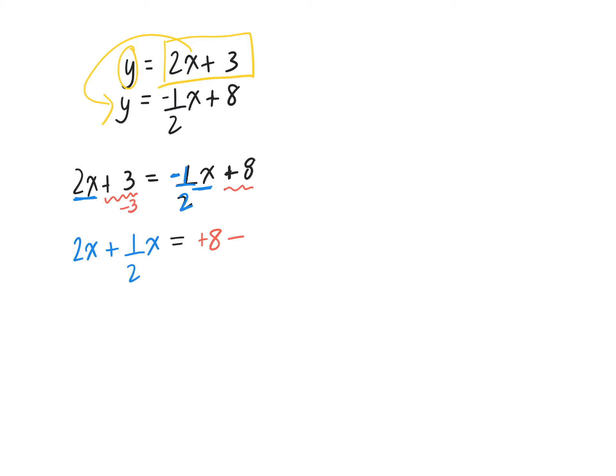I have my positive 8 already on the right side of the equation. Positive 3, opposite operation becomes minus 3. So I have to add these fractions together: 2 over 1x plus 1 over 2x. If I want to get rid of this fraction, what's the opposite of divide by 2? Multiply by 2.